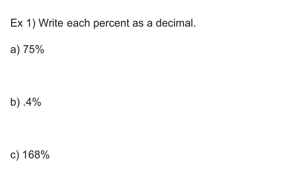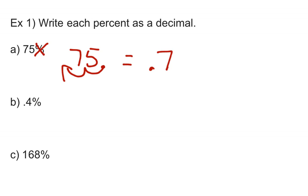Let's do a couple examples. Example one: write each percent as a decimal. Part A is 75%. The number 75 has its decimal point to the right — it's like 75.0. To get rid of the percent sign, I move the decimal point two places to the left, making this number 0.75. I'll let you go ahead and do parts B and C, being aware of where the decimal point is to begin with. Pause the video and give it a try.